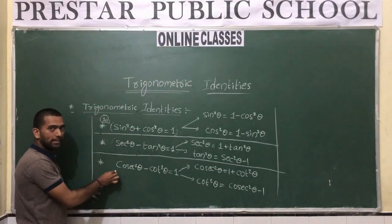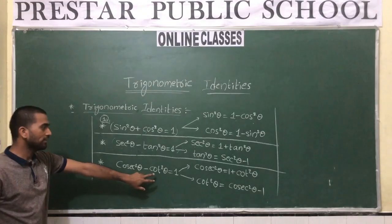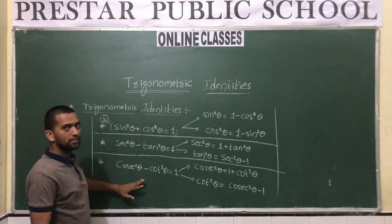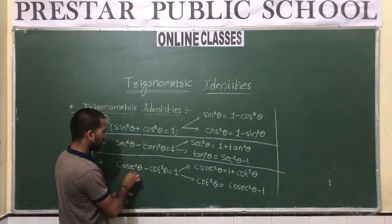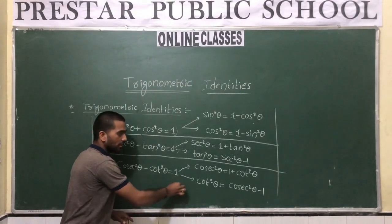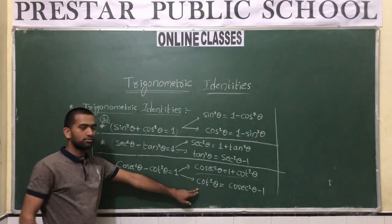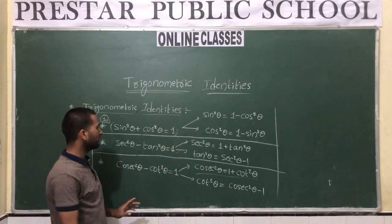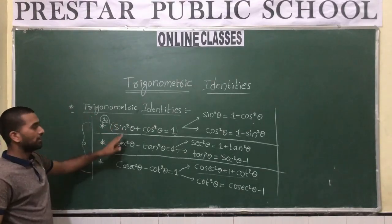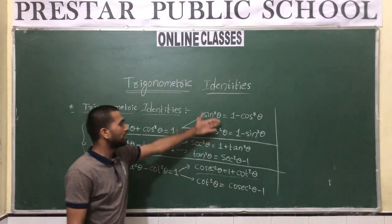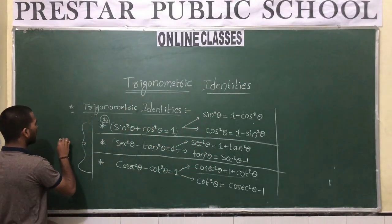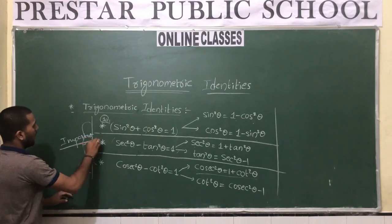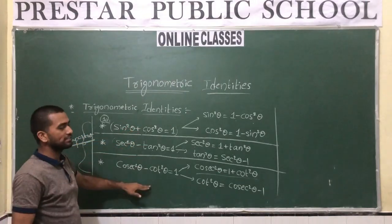The third and last identity is cosec²θ - cot²θ = 1. Here also the same way we will get two more formulas: cosec²θ = 1 + cot²θ, and cot²θ = cosec²θ - 1. These are very important identities, and from these identities we get six formulas which can all be used in problems.